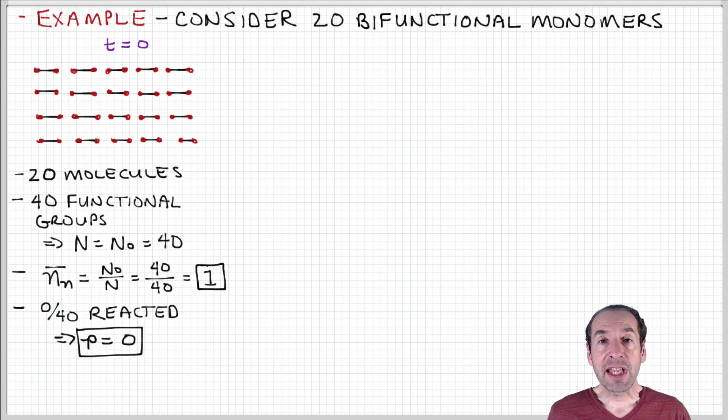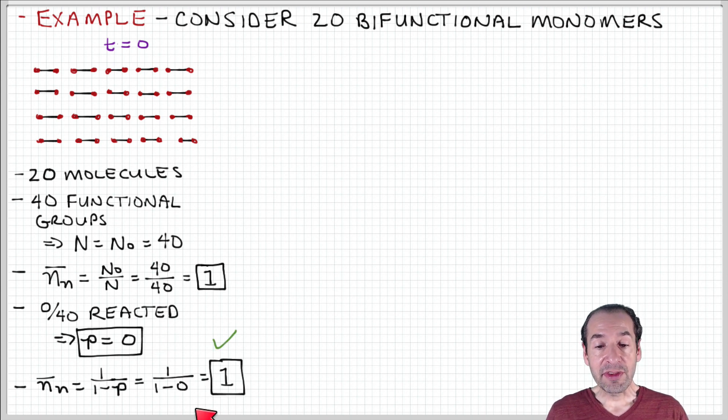We also know that at this time, nothing has reacted. So 0 out of 40 of these functional groups have experienced a reaction. Therefore, our extent of reaction P is equal to 0. We can test the Carruthers equation then by plugging in 0 for extent of reaction P. And again, we recover this ratio 1 over 1, which is equal to 1. So we get a degree of polymerization of 1 using the Carruthers equation as well. So that checks out.